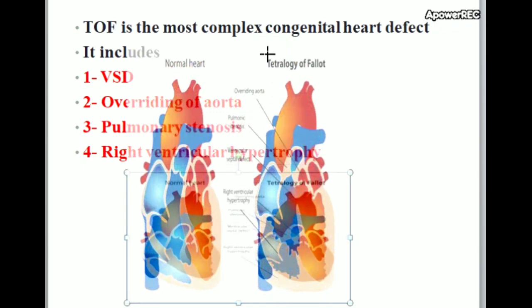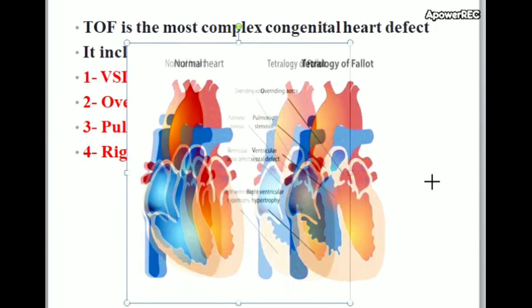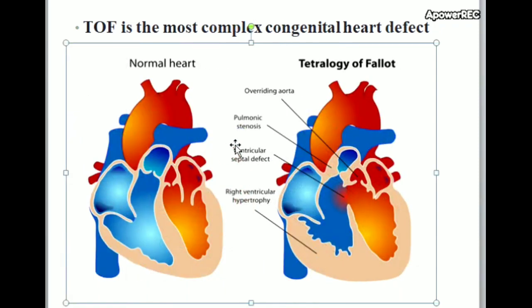From this picture you can understand easily — there are four defects. First, overriding of aorta: the aorta is positioned directly over a ventricular septal defect.